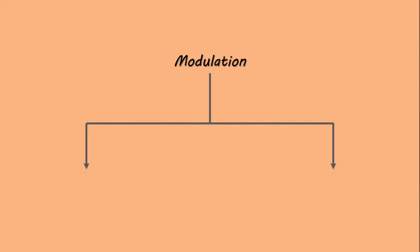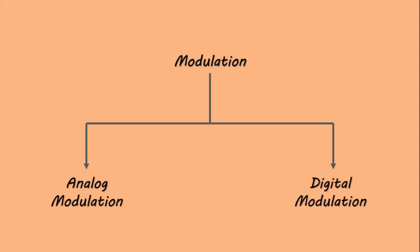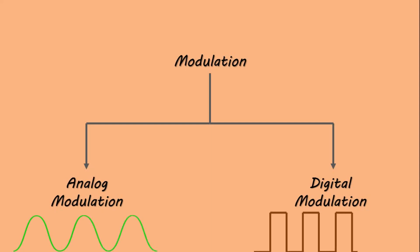Based on the nature of the message signal, modulation can be classified into two categories: analog modulation and digital modulation. If the message signal is analog in nature then it is called analog modulation. On the other hand, if the message signal is digital in nature then it is called digital modulation.